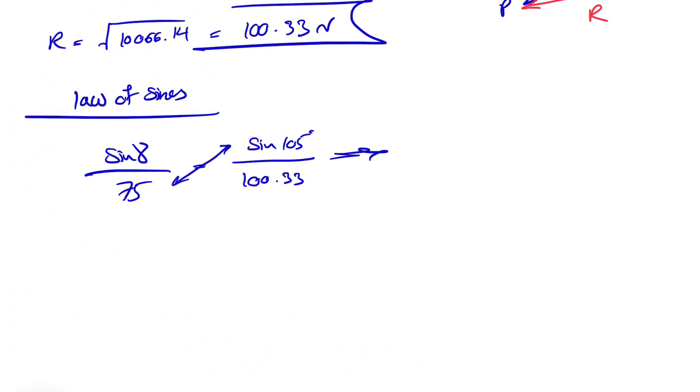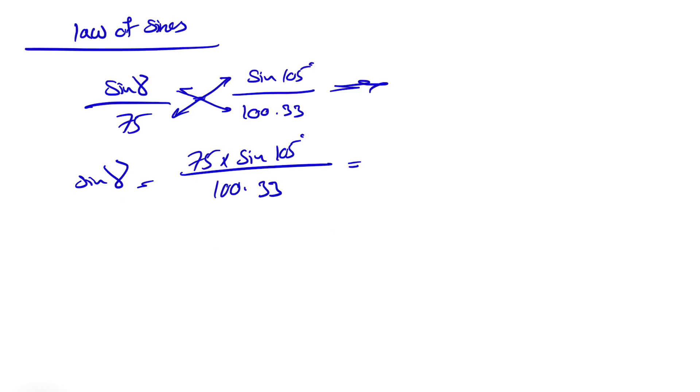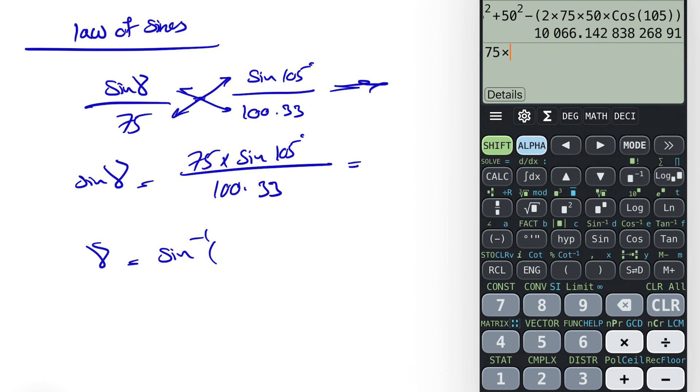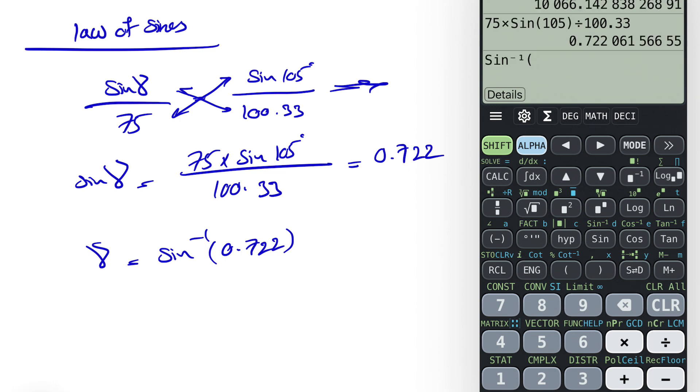If we cross multiply these two, we have sin of gamma equals 75 times sin of 105 degrees over 100.33. And whatever we get for that one, our gamma would be sin inverse of that value. Let's figure that value first. So we have 75 times sin of 105 divided by 100.33. This is going to be 0.722. So we have sin inverse of 0.722.